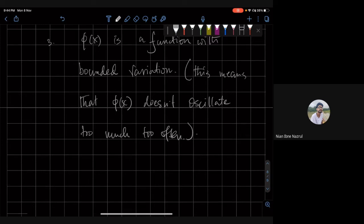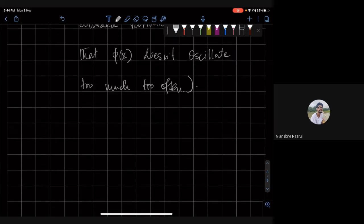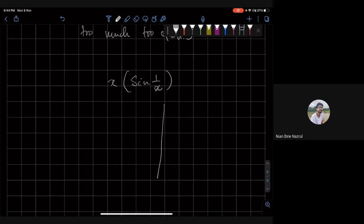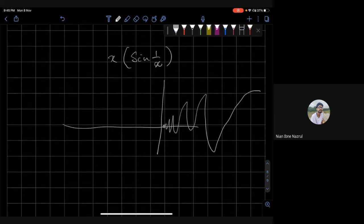Okay, so there is an example of a function, say I think it's sine of one over x times x, and this function if you plot it in an interval around zero what it does is something like this. And if you integrate this function, the modulus of this function, again the problem is that the number of oscillations become infinite as you reach zero, as you approach zero.